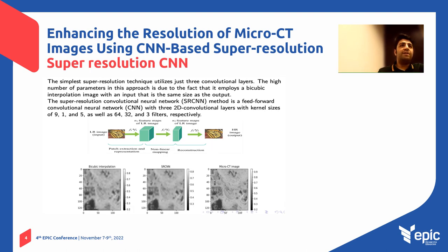There are different techniques investigated in this study. The first and simplest one is the Super Resolution Convolutional Neural Network (SRCNN). This basic model has only three convolutional layers with kernel sizes of 9, 1, and 5, and the number of filters is 64, 32, and finally either 3 for RGB or 1 for grayscale — grayscale in this case.